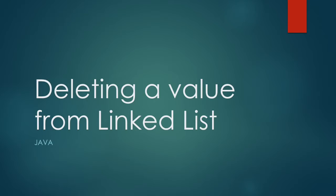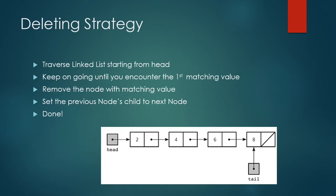So now let's talk about deleting a value from a linked list. The first thing we're going to do is traverse the linked list starting from the head. Keep going until you encounter the first node that has the value you want to delete. Then all you have to do is remove the node by setting the previous node's child to the next node.